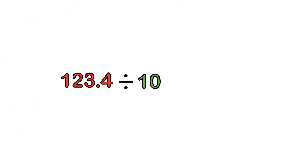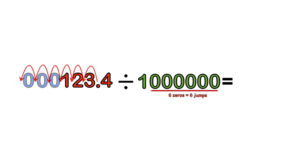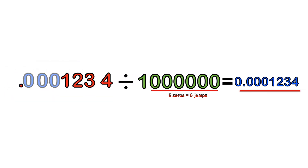Let's look at one more example: 123.4 divided by a million. Since we already have a decimal point, we just count the zeros. Six zeros means six jumps to the left. We make six jumps, and since we have three blank jumps, we put zeros in those spaces. The answer is 0.0001234. So 123.4 divided by a million is 0.0001234. And that's all there is to it.